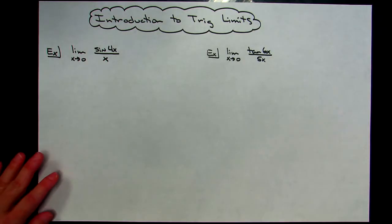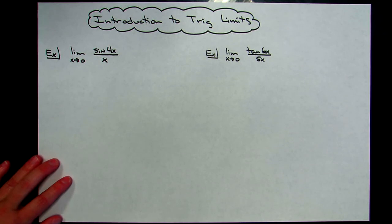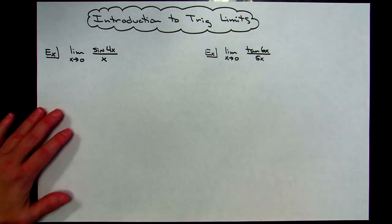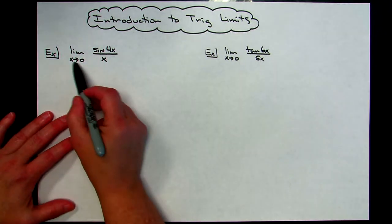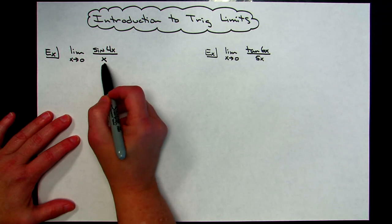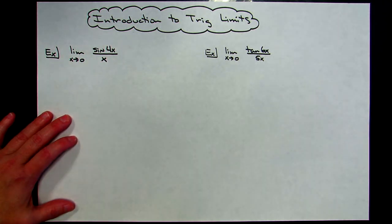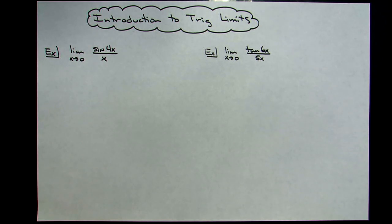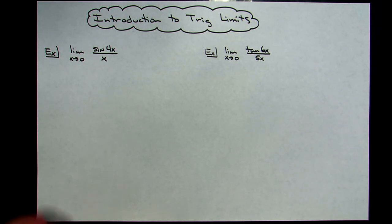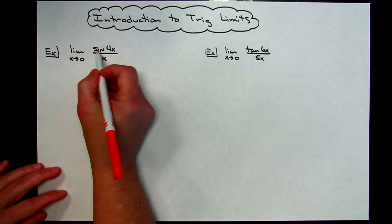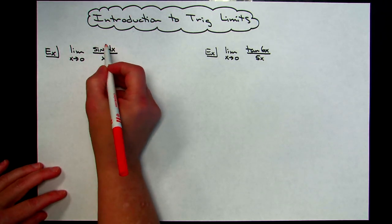Now I'm going to work through about four examples. The first one is going to address the limit as x approaches 0 of sine kx over x. According to the special trig limit I just showed you, we know the answer is going to be 4. On a multiple choice test you could just instantly do that. However, if you're trying to show your steps on an open-ended test, you've got to algebraically manipulate this. I need to recognize this as being one of my special trig limits.